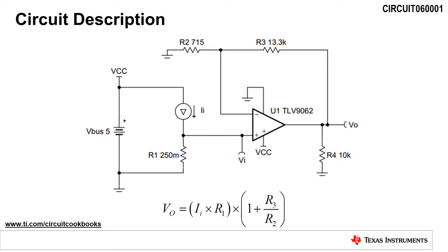The gain of this circuit is composed of two parts. First, the sense resistor, R1, converts the load current, I sub I, into a voltage based on the value of its resistance. This voltage is called the sense voltage.